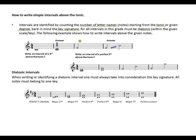The following example shows how to write intervals above the given note. For the first example, we've been given C. Write an interval of a third above the tonic C. C is your tonic: count C as one, D as two, E as three — E would be your third. That's where you position your second note.